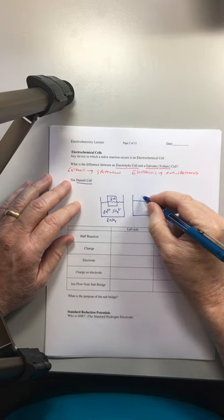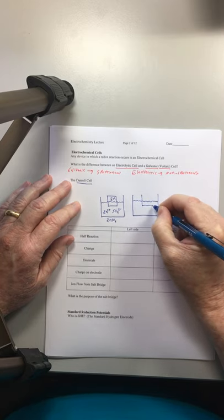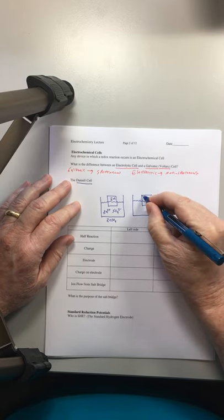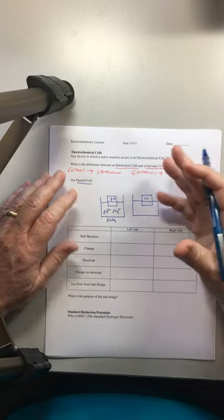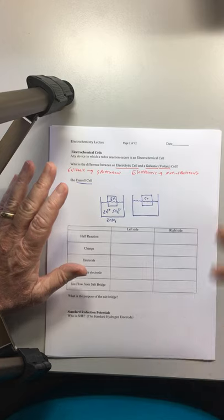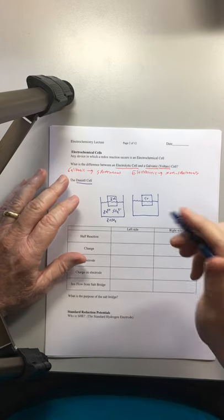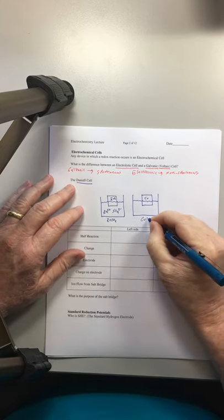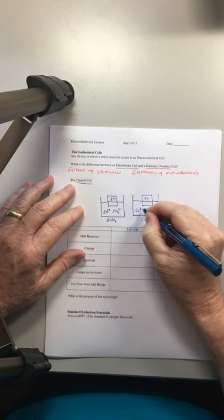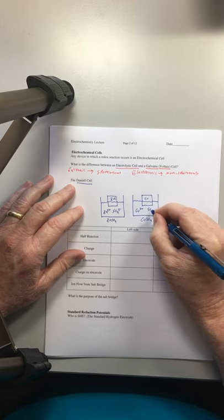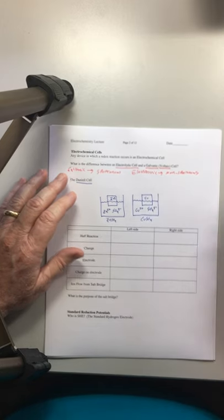Over here on the other side, the Daniell cell, we'll have a piece of copper. Solid copper, metal, pure, not like a penny. Pennies are only partially copper. This is pure copper. And this solution would be copper sulfate. So we'll have Cu2+ and SO42-.